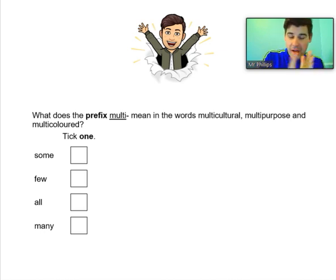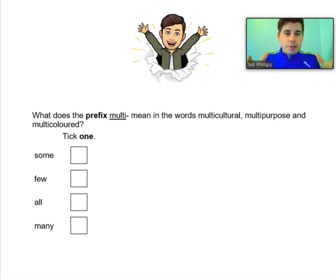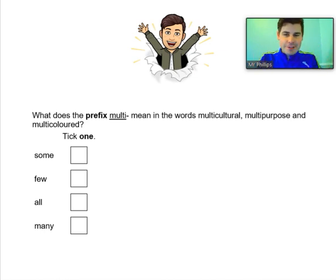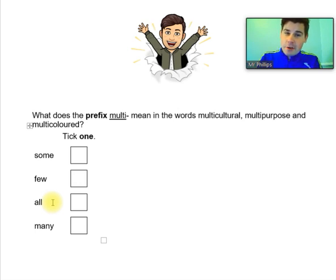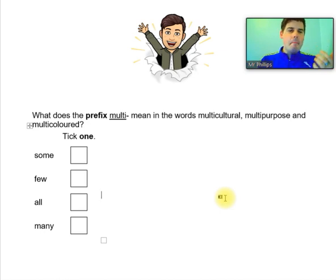Multicultural means there's lots of different cultures in a place. Multi-purpose means it has lots of purposes, and multicoloured means it has lots of colours. Now obviously 'lots of' isn't in the options, but it's not some, it's not few, it's not all — because multicoloured is not every single colour. It is many: many cultures, many purposes, many colours. So multi means many.